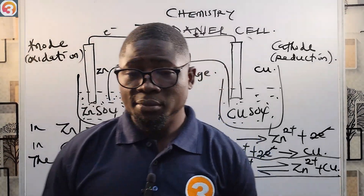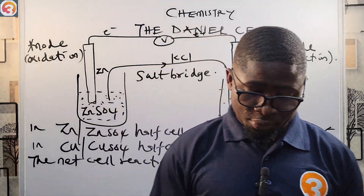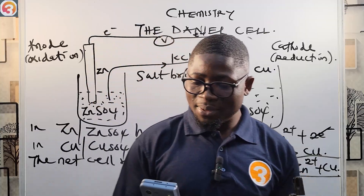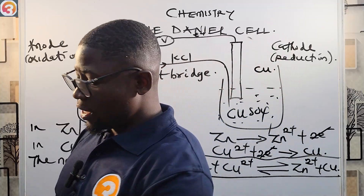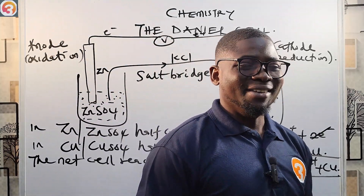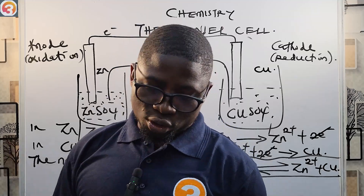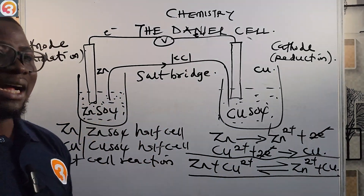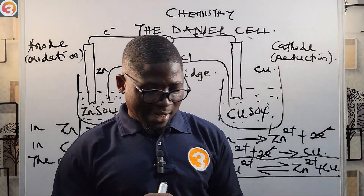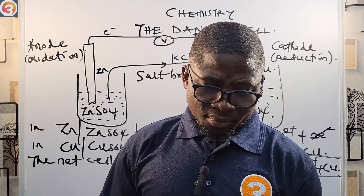Now going back to the app and the 2007 question number 48: 'A reaction that takes place in a Daniel cell is...' The answer is obviously D — a redox reaction. It is an oxidation and reduction reaction, with oxidation occurring at the anode and reduction occurring at the cathode.